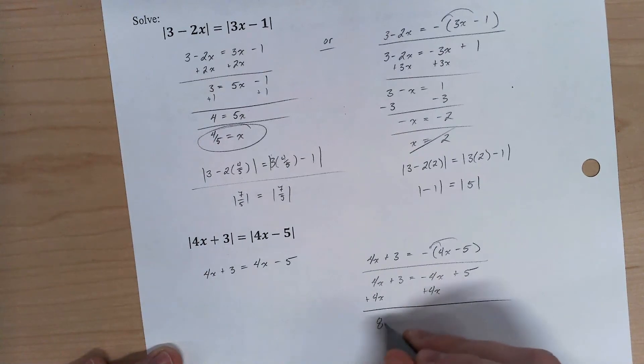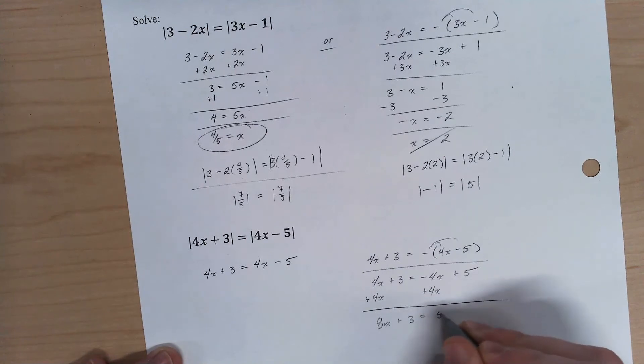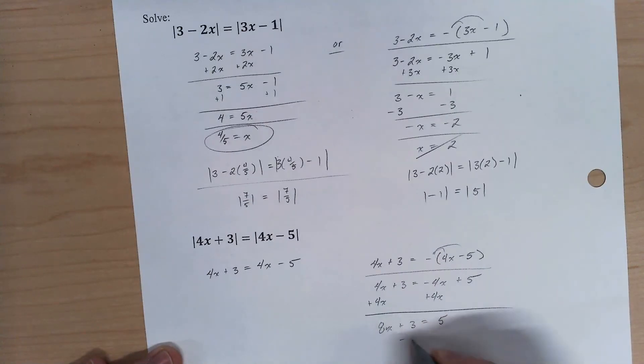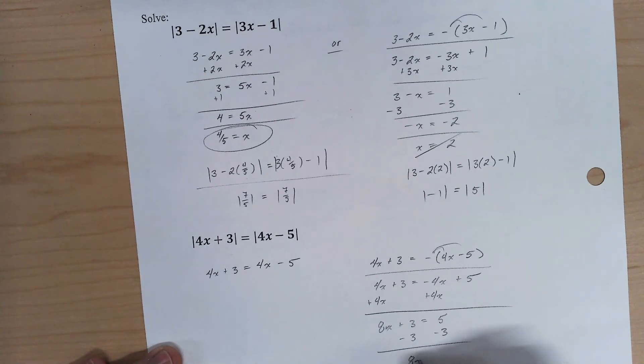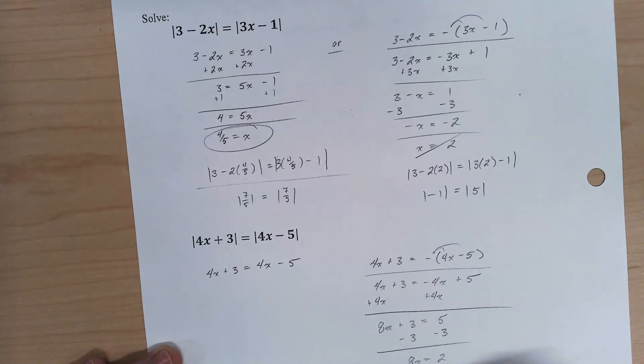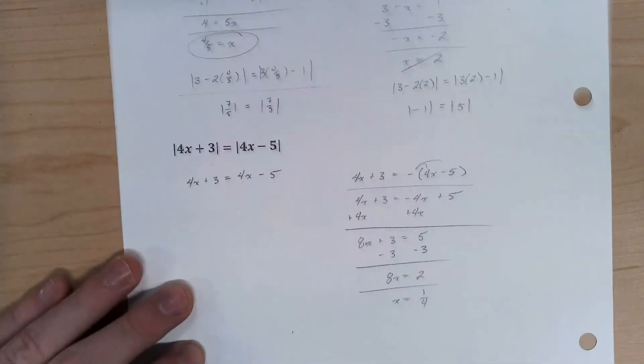I'm going to end up with 8x plus 3 is 5, subtract 3, 8x equals 2, divide by the 8 and simplify, x is 1 over 4. There we go.